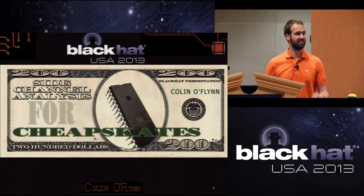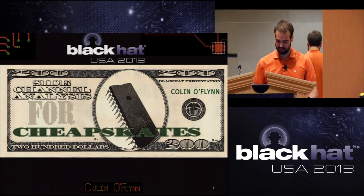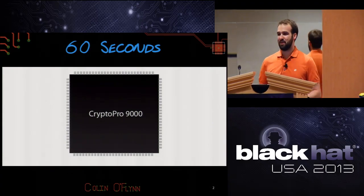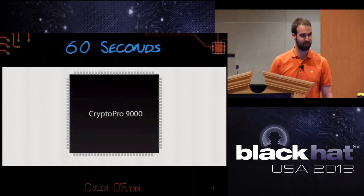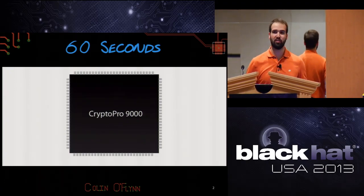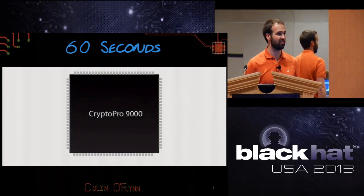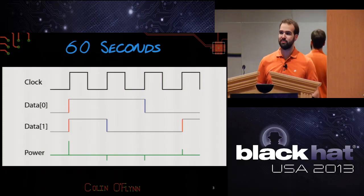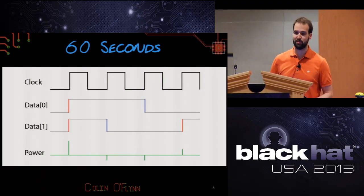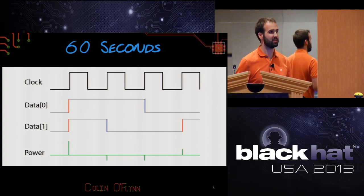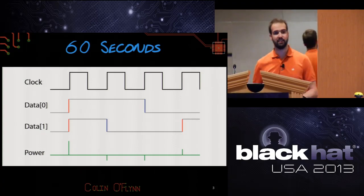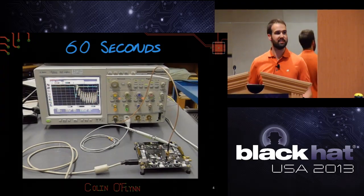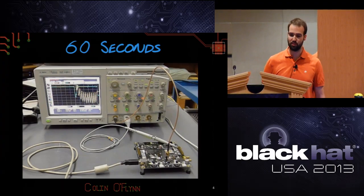So maybe you're wondering whether to attend this presentation. I'm going to give you a quick 60-second version of the next 60 minutes. Basically, with power analysis attacks, we have some sort of crypto hardware — hardware that has cryptography implemented in it, or even just a general microcontroller running crypto libraries. We can look at the power that device is consuming on a very short time scale, clock by clock cycle, to figure out some information about the data it's processing. Once we figure that out, we can actually break the encryption — figure out what the secret key was or some other secret we're not supposed to know.